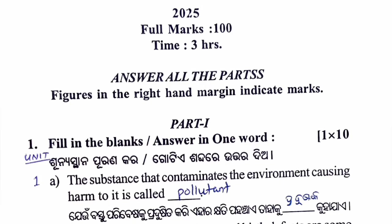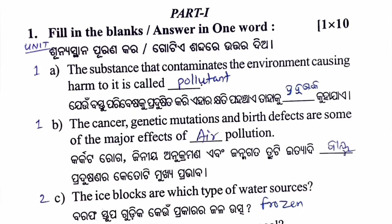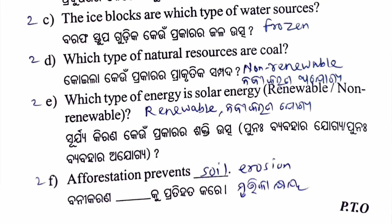Question 1: The substance that contaminates the environment, causing harm, is called a pollutant. Cancer, genetic mutations, and birth defects are some of the major effects of air pollution. Ice blocks are a type of frozen water source. Coal is a type of non-renewable natural resource.